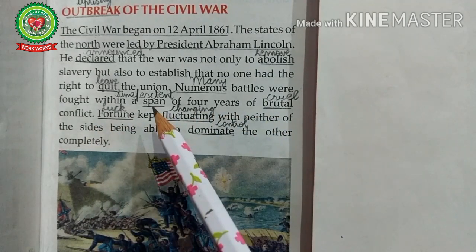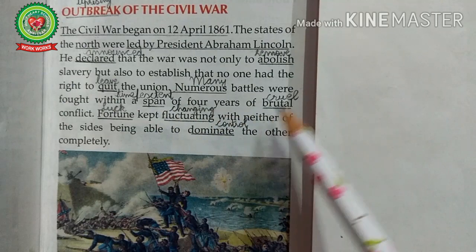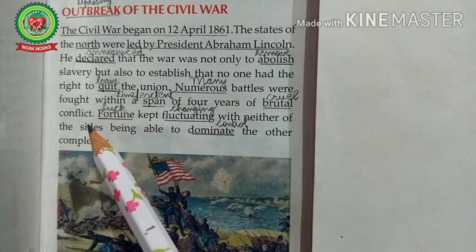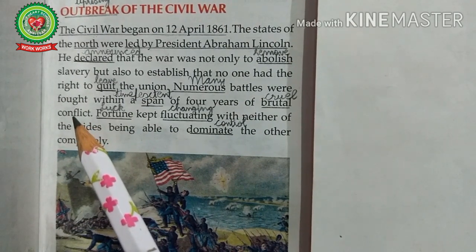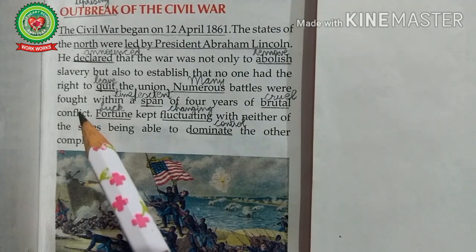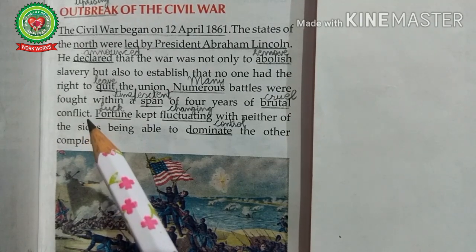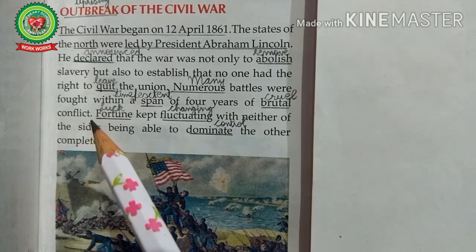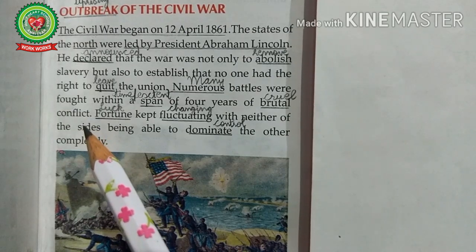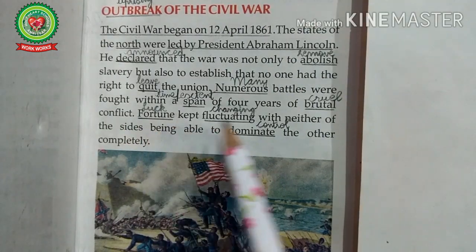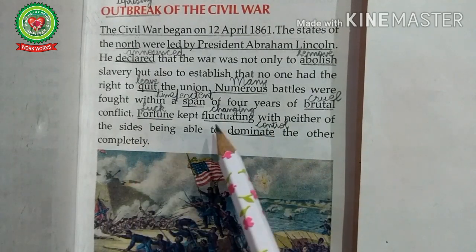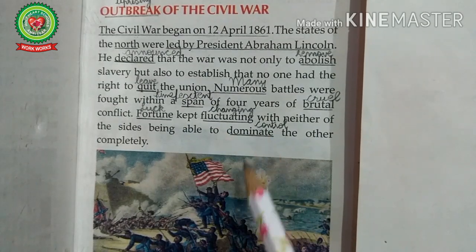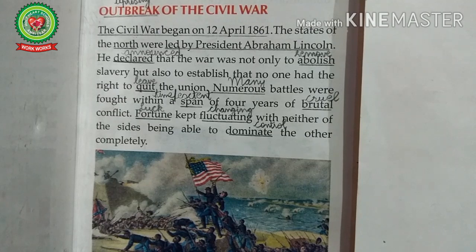Numerous battles were fought within a span — span means time or extent — of four years of brutal, meaning cruel, conflict. In the beginning it seemed the Confederates would win, because they had well-trained military and strong opinions about their way of life they were willing to defend. But on the other hand the Union states also had a large army, strong navy, communication system, and weapons. So fortune kept fluctuating — fluctuating means changing — with neither side able to dominate, meaning control, the other completely.